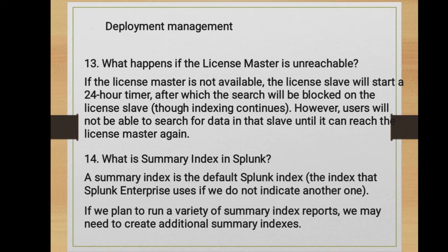What happens if the license master is unreachable? If the license master is not available, the license slave will start a 24-hour timer, after which search will be blocked on that license slave. Users will not be able to search for data until it can reach the license master again.